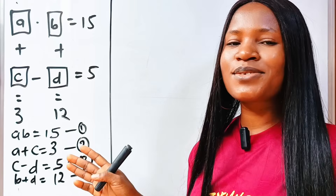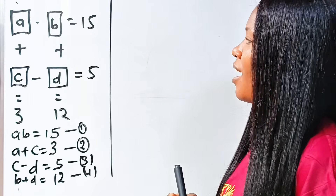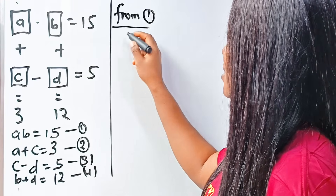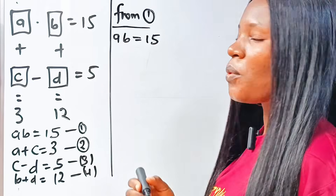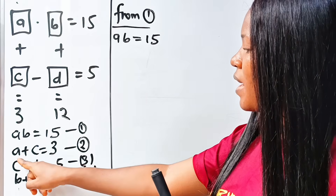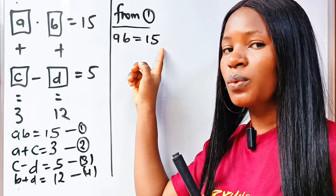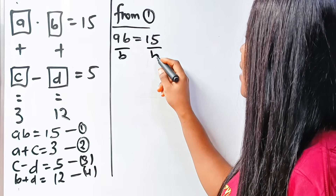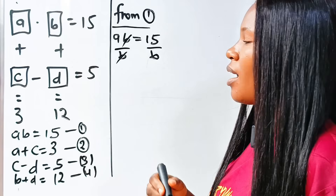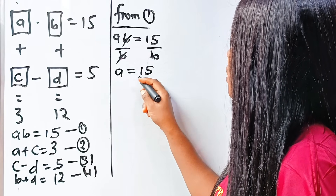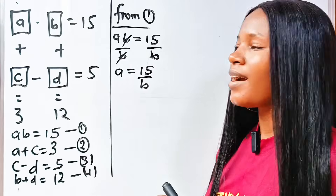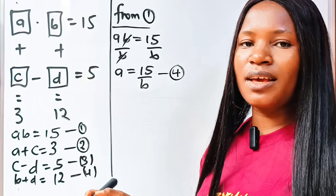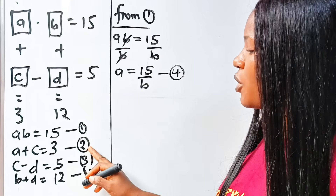From equation 1, we have A multiplied by B is equal to 15. We divide both sides by B, so B cancels and we get A is equal to 15 divided by B. We will call this equation 4, and we are going to substitute it into equation 2.